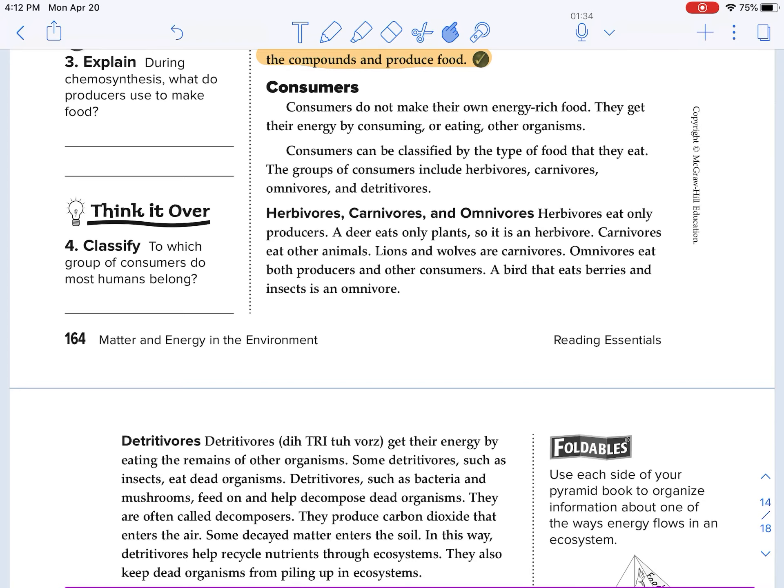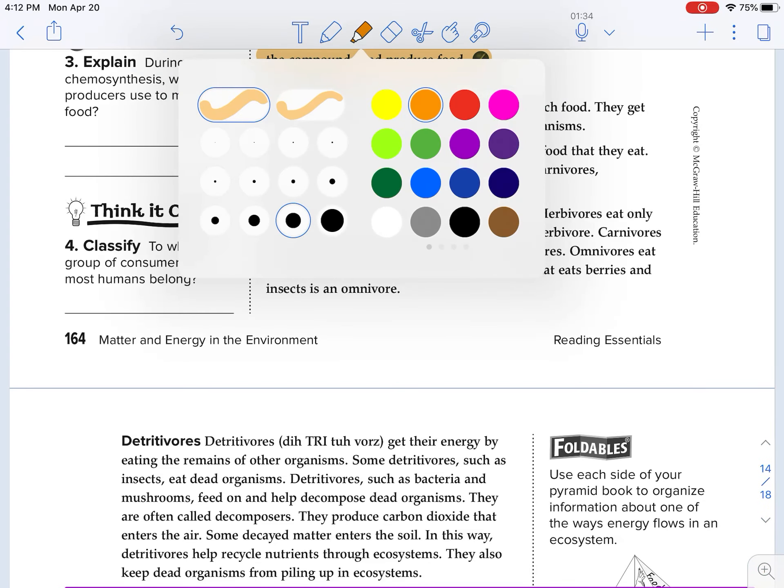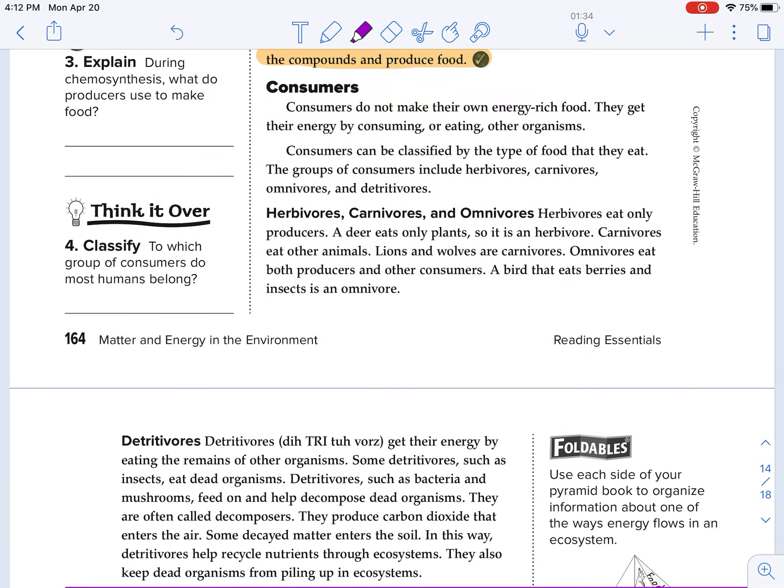So consumers. This is everything else. Consumers do not make their own energy-rich food. They get their energy by consuming or eating other organisms. Consumers can be classified by the type of food they eat. The groups of consumers include herbivores, carnivores, omnivores, and detritivores.